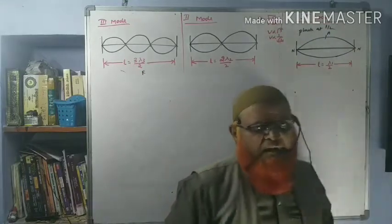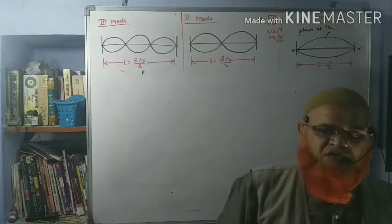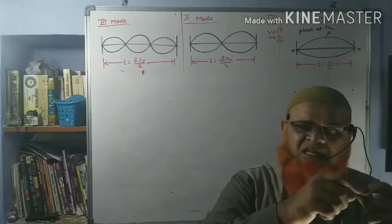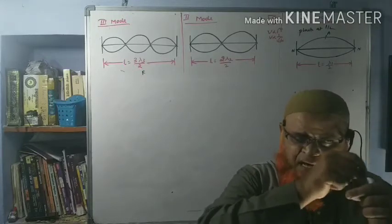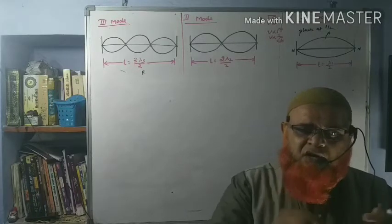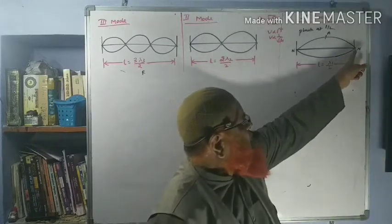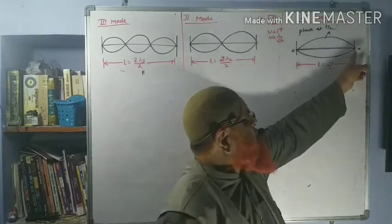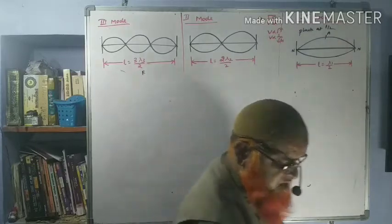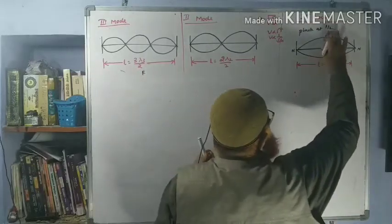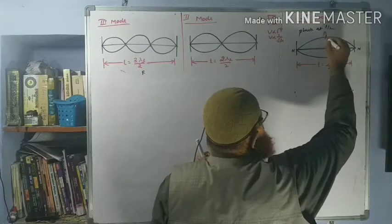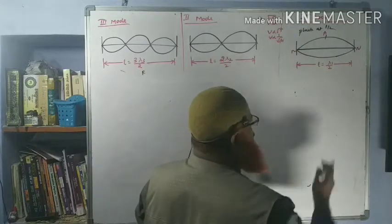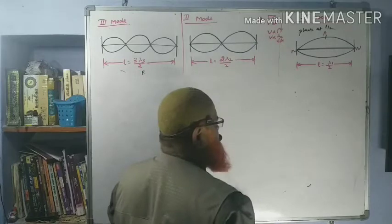According to the Oxford dictionary, node means a knot — a place where vibrations are minimum, essentially zero. An antinode is a point where vibrations are maximum. The length between two successive nodes is half of the wavelength, that is λ/2.